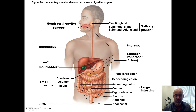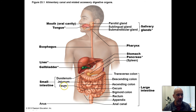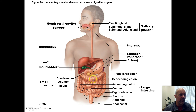The jejunum and the ilium are kind of wadded up together, so it's hard to distinguish on a diagram which part is the jejunum and which part is the ilium. But you should know the order of those three. So that's where we're headed now — down into the small intestine.